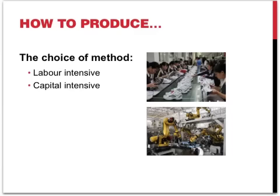The question of how to produce comes down to a choice of method: should the production process be more labor-intensive or more capital-intensive? The use of the different factors of production depends on the availability of the resources and their relative cost. For example, recent increases in the price of farm labor has already led to speculation that the production of fruit and grapes in South Africa will now become more capital-intensive, since labor has become more expensive.